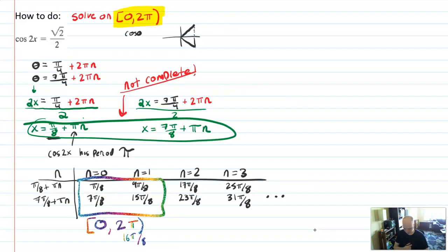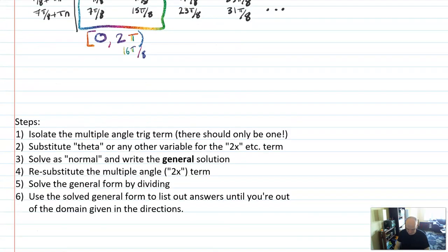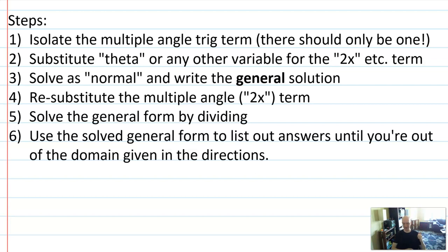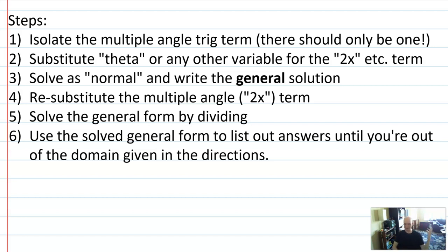Here's all that work on one page. Now let's go back and look at the written steps. Your first job, if you have to, is to isolate that multiple angle trig term — break it out so it's the only thing you're dealing with. If there's anything else going on in the equation, get rid of that first. Then do that substitution where instead of 2x or 3x or 4x, you just write theta. Pretend it's a standard trig equation.